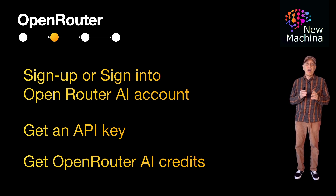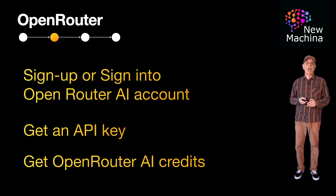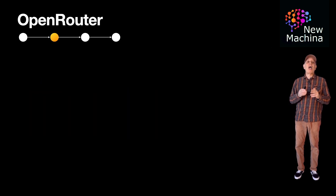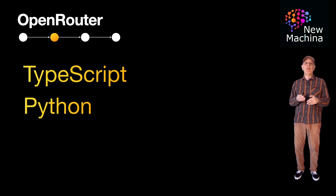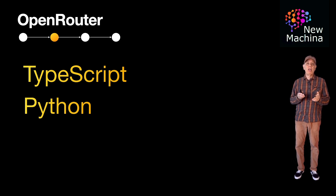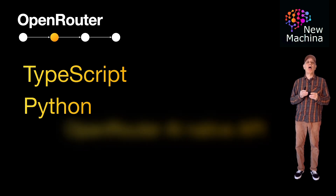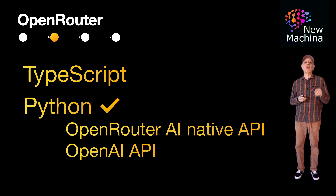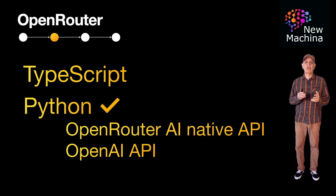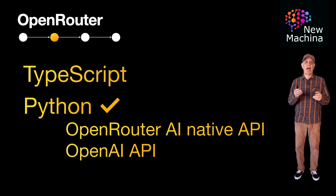You can monitor your usage and balance in the dashboard. You can use TypeScript or Python to integrate with OpenRouter. In this video, we'll be using Python. If you're using Python, there are two ways to integrate with OpenRouter: the first is to use OpenRouter's native integration, and the second is to use OpenAI's API.